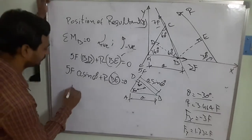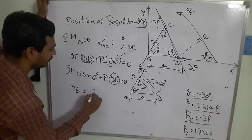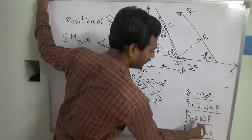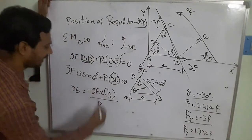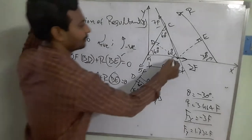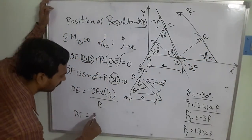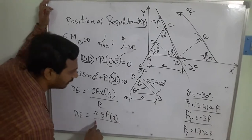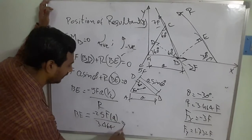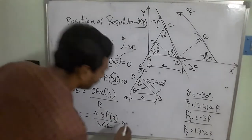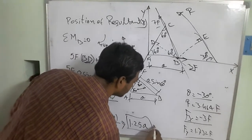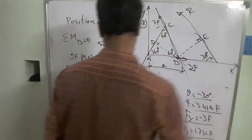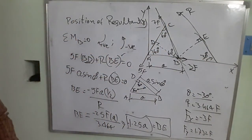Solving for BE: BE = −5f × a × sin 60° / R = −5f × a × (1/2) / 3.464f. The f cancels, giving BE = −2.5a / 3.464 = −0.722a... wait, simplifying: BE = −2.5f × a / 3.464 = approximately −1.25a / 3.464... The final result is BE = 1.25a (negative sign indicates direction). This gives us the perpendicular distance and thus the position of the resultant force.